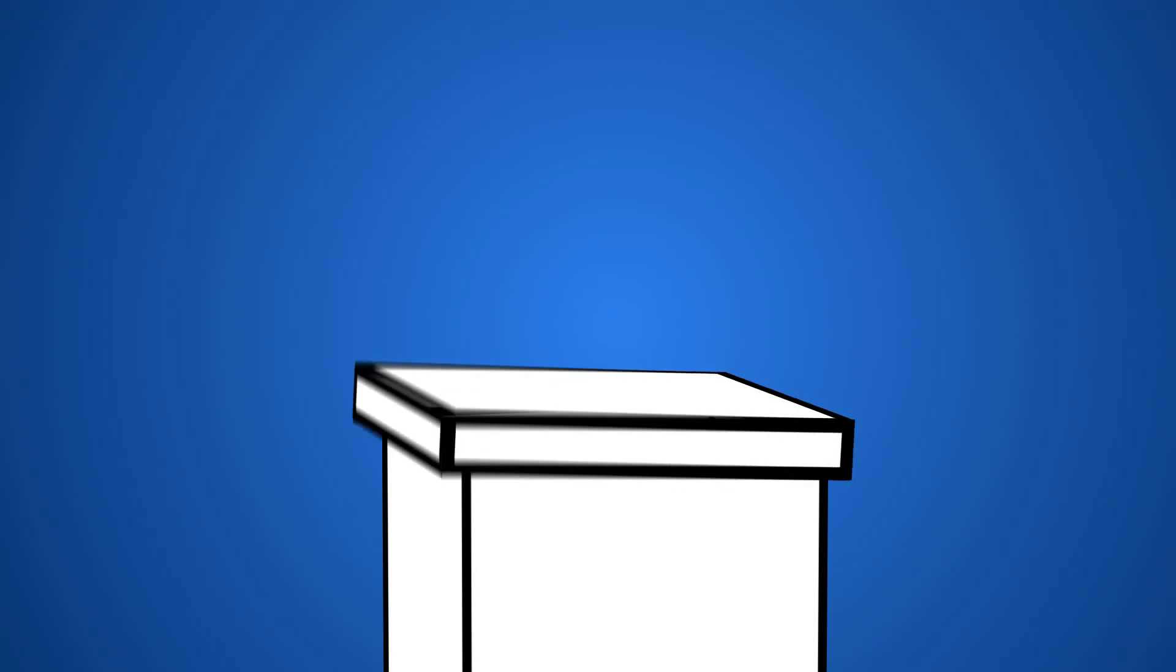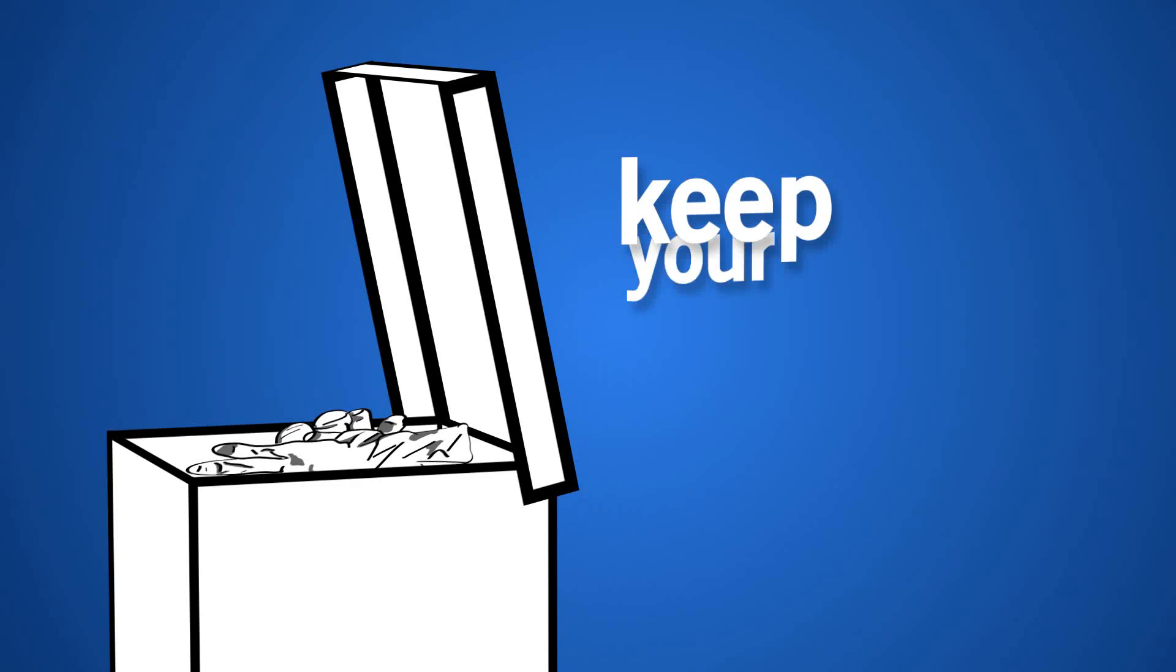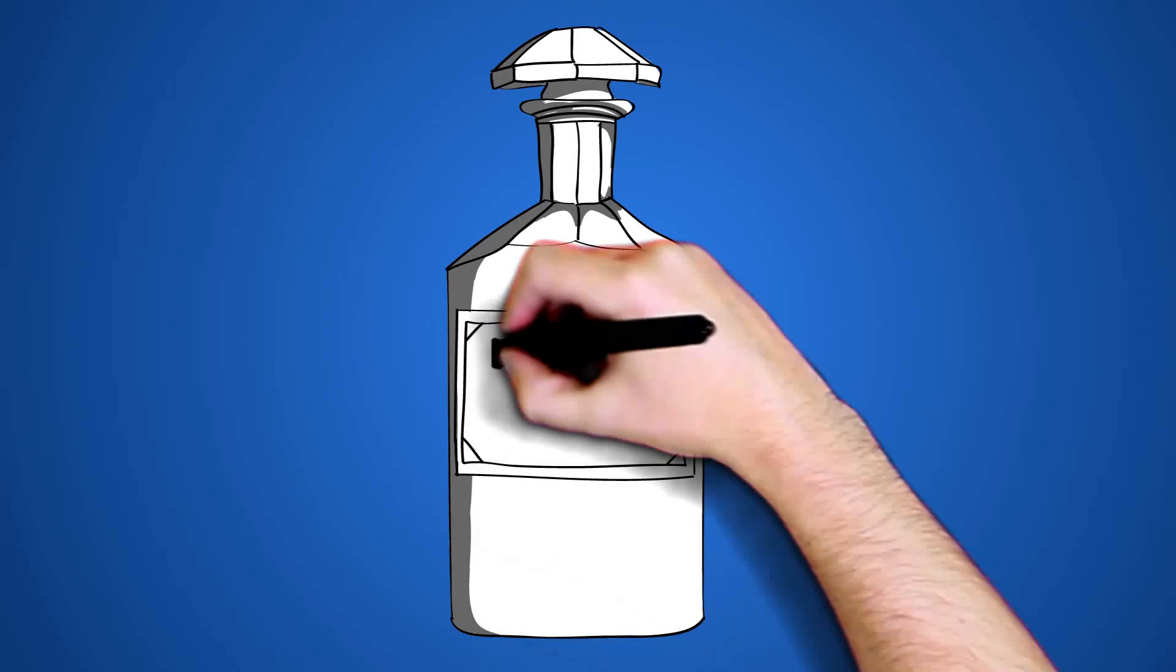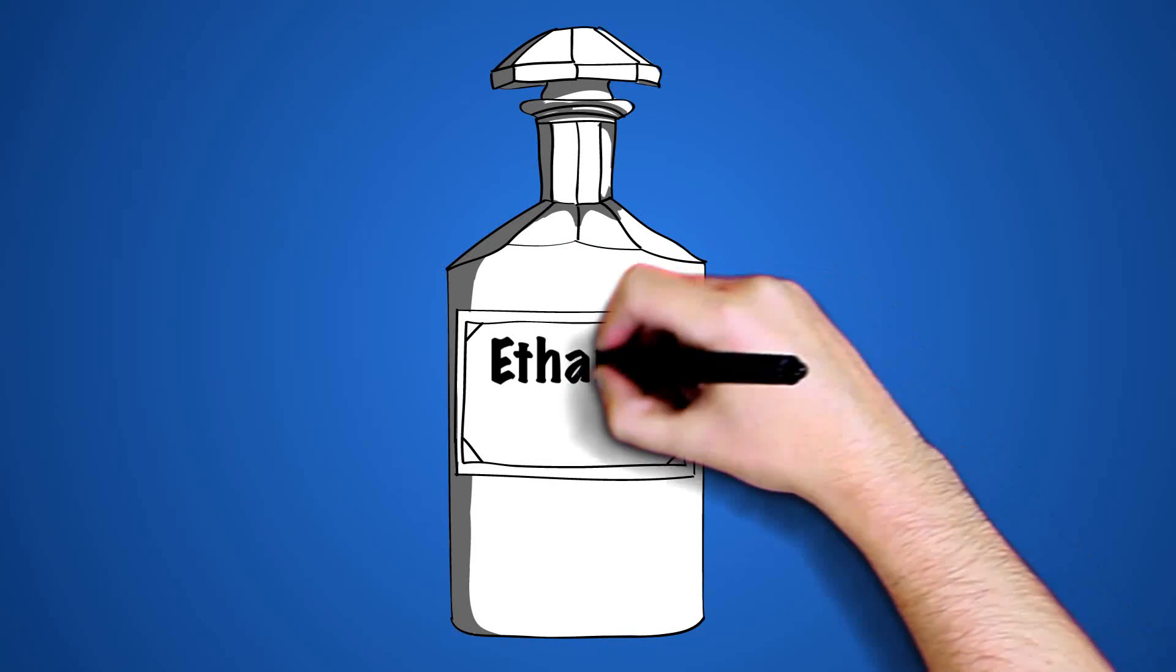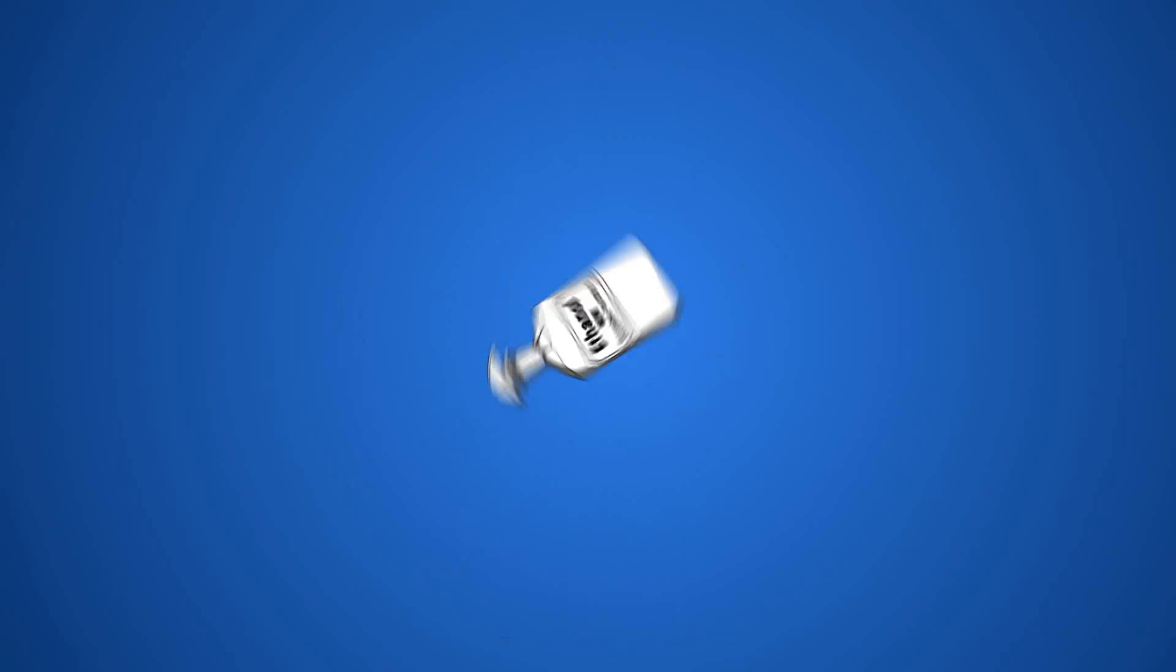Similarly, cluttered or untidy work areas are a bad idea too. Keep your workspace clear and clean up spillages immediately. Leaving splashes of various chemicals around is risky business. Any bottles you use should also be labelled clearly with both the contents and your initials to prevent unnecessary confusion.